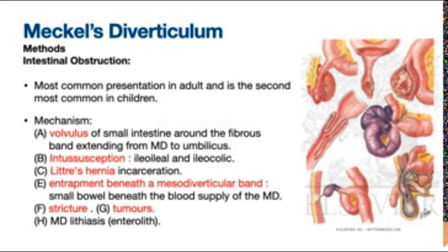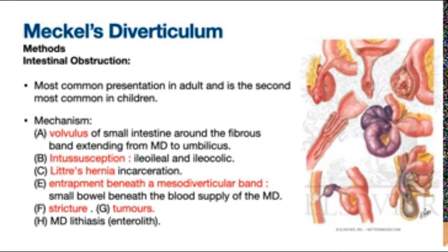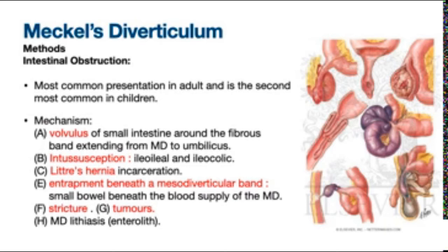Bowel obstruction is the most common presentation of Meckel's diverticulum in adult patients and the second most common in children. Mechanisms include volvulus of the small bowel around a fibrous band extending from the diverticulum to the umbilicus, intussusception (ileo-ileal or ileo-colic), Littre's hernia incarceration, entrapment of small bowel beneath a mesodiverticular band, and other causes such as stricture, tumors, and enteroliths.